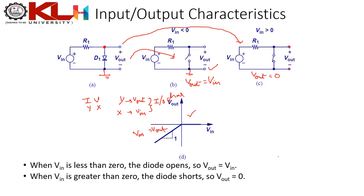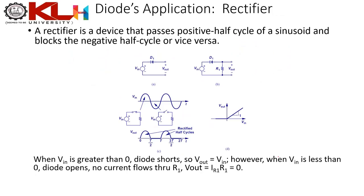In IO characteristics we plot output voltage on the y-axis and input voltage on the x-axis. Now we move to one of the prime applications of a diode — the rectifier. A rectifier is a device that passes the positive half cycle of a sinusoid and blocks the negative half cycle, or vice versa.